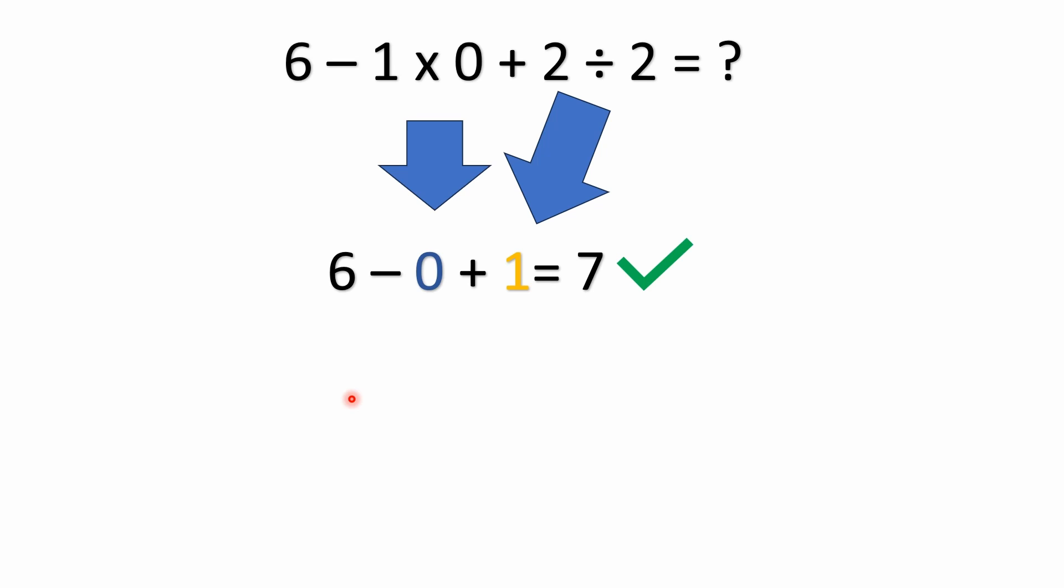Alright, so first of all, we've got to use the order of operations convention, which normally would be parentheses, exponents. But we don't have parentheses or exponents here. We do have multiplication and division. And if you remember by the order of operations, multiplication and division have equal precedence. So we're just solving those from left to right.